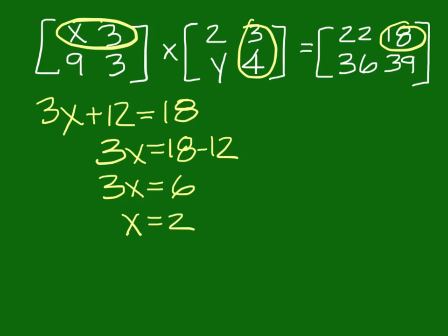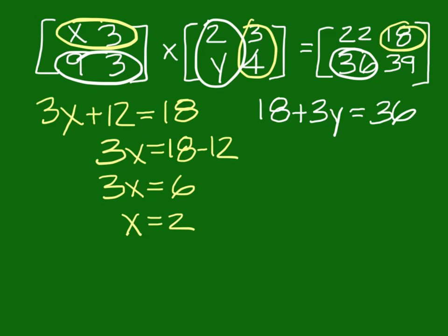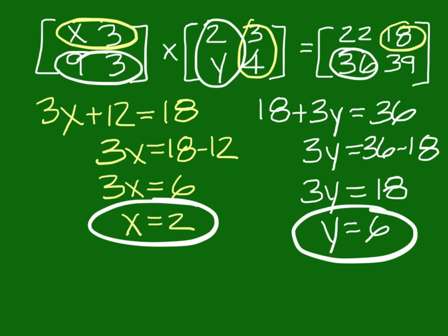So let's look for Y now. The Y is in this column. We've already used this one — you could plug 2 in for X and use that one, but let's use one that has them both already there. Let's use this row and this column to solve for Y. That's row 2, column 1, and that pertains to 36. So 9 times 2 is 18, and then 3 times Y is 3Y. All of that is equal to 36. 3Y equals 36 minus 18, so 3Y equals 18 and Y equals 6. So if you had 2 for X and 6 for Y, you have them both right.